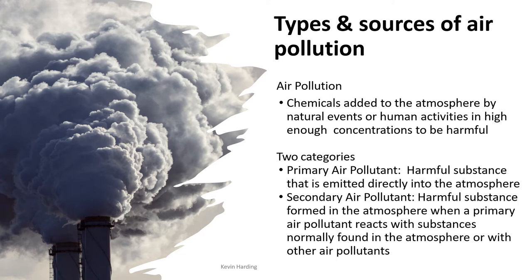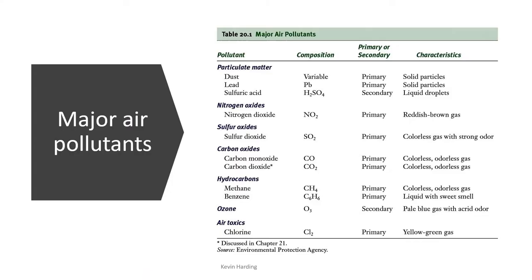Air pollution also comes from human events — the industrialized world and engineers are very guilty of polluting the atmosphere through industrial processes that emit pollution through stacks. There are two types of pollutants: primary air pollutants are harmful substances emitted directly from the source, and secondary air pollutants form in the atmosphere when primary pollutants undergo chemical reactions.